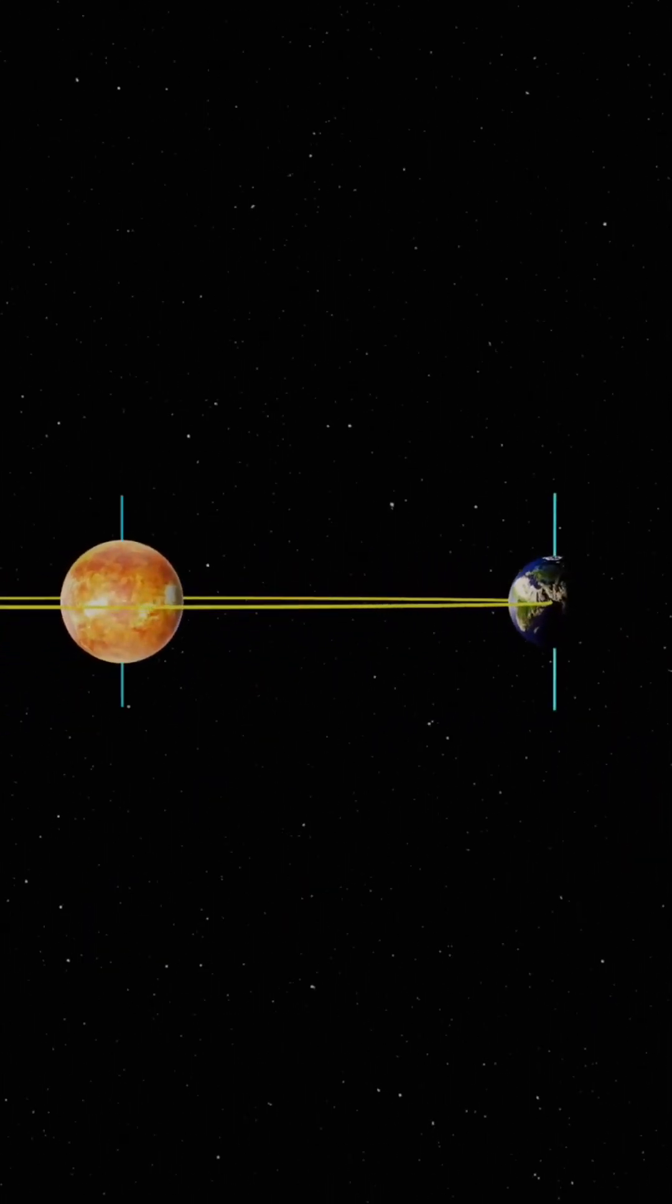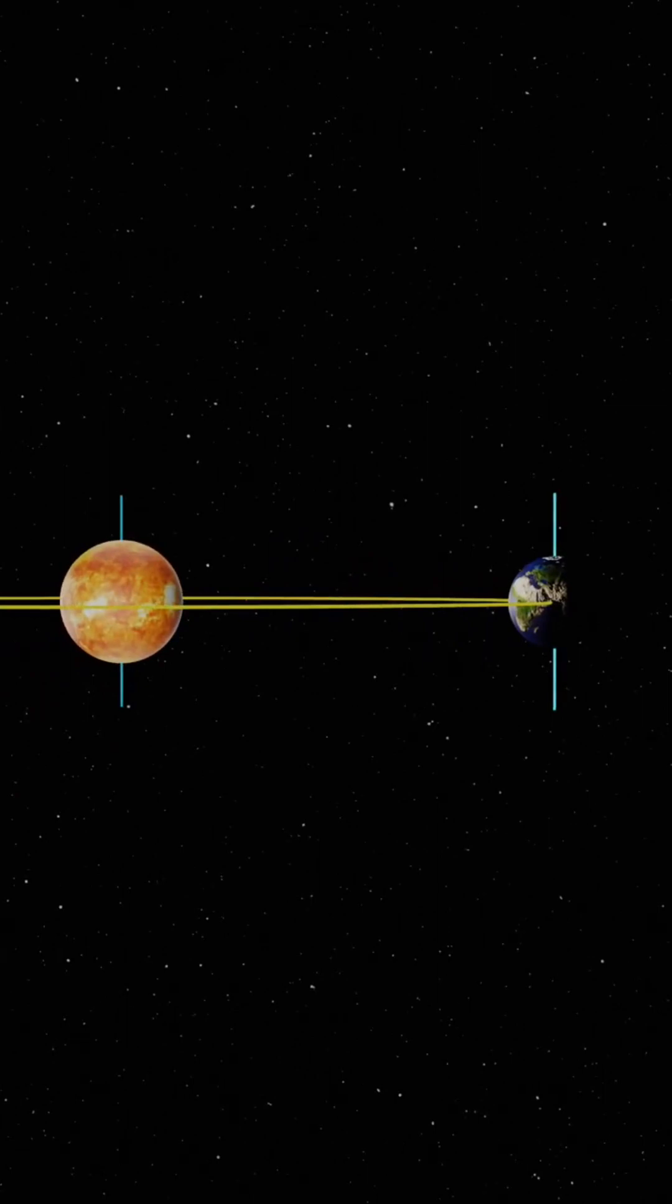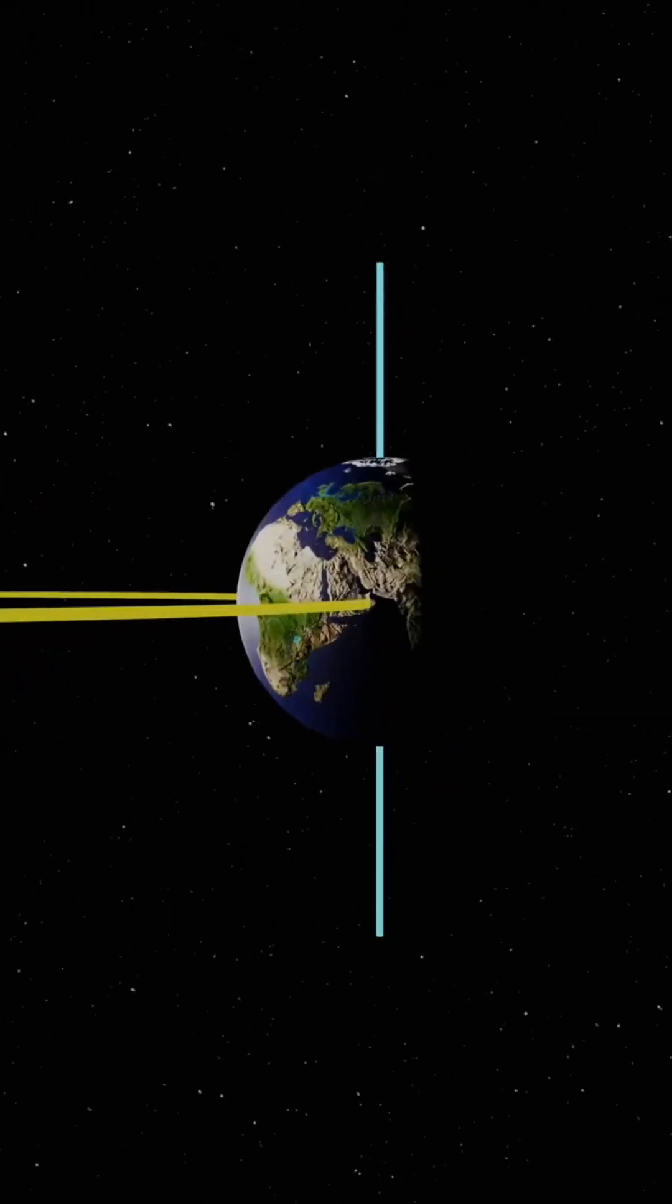If the earth and the sun were equal, then every part of the earth would have 12 hours of day and 12 hours of night, 365 days of the year.